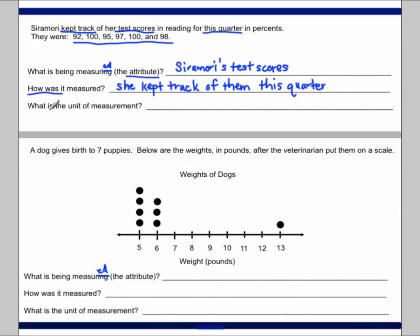And lastly, what is the unit of measurement? The unit of measurement that we are getting, so these are 92%, 100%, 95%, 97, 100%, 98%. These are percents, and this is very, very key. So the unit of measurement is the percent.